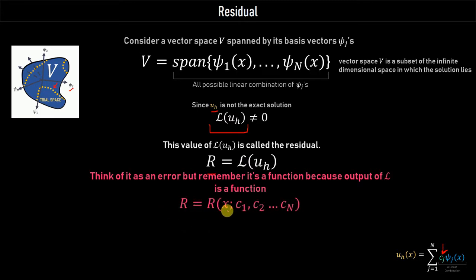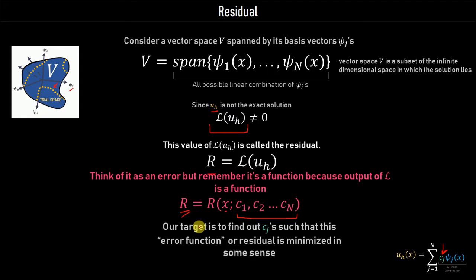In general, the residual is a function of X and depends on C₁, C₂, ..., Cₙ, because UH contains these Cⱼ's and we are putting this UH into our original partial differential equation to calculate the residual. Our only target is to find out these coefficients C₁ through Cₙ so that this residual is minimized — in some sense, minimizing an error function.